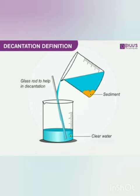Sedimentation mein heavy impurities jo hoti hain, jo insoluble hain, woh settle down ho jaati hain neeche. Is ke baad hai decantation — yeh sedimentation ke baad yeh process hum karte hain. Saaf paani jo hai, jo sand ke upar rehta hai jise sediment kaha jaata hai, usko hum doosre container mein dalte hain, pour karte hain, jis se sand, reet jo hai woh peeche reh jaati hai.